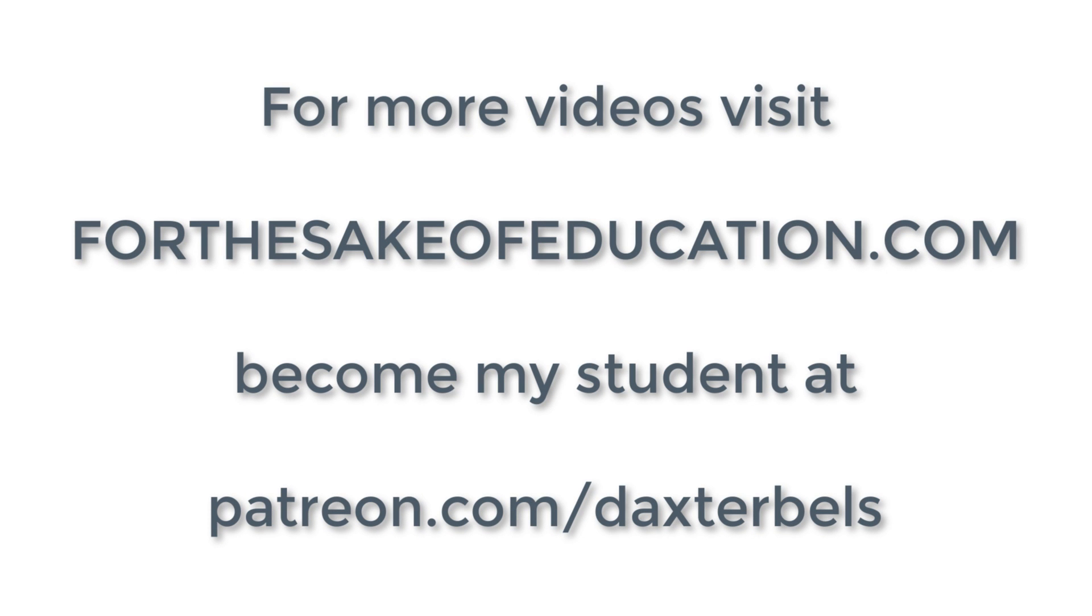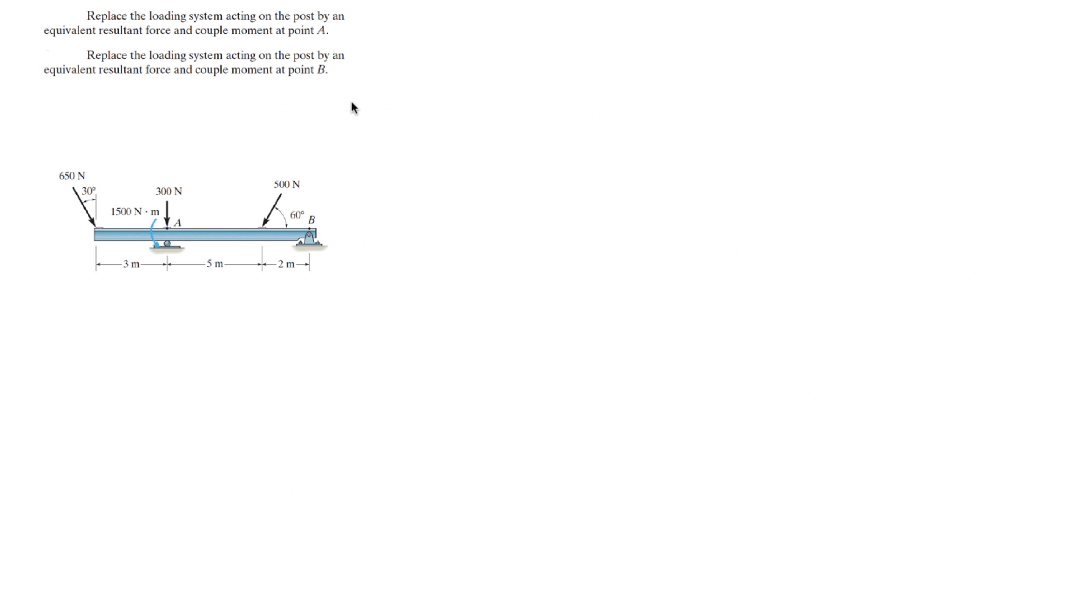For more videos visit ForTheSakeOfEducation.com or become an official student at patreon.com/DaxterBells. This problem says replace the loading system acting on the post by an equivalent resultant force about A and then do the same thing about B.